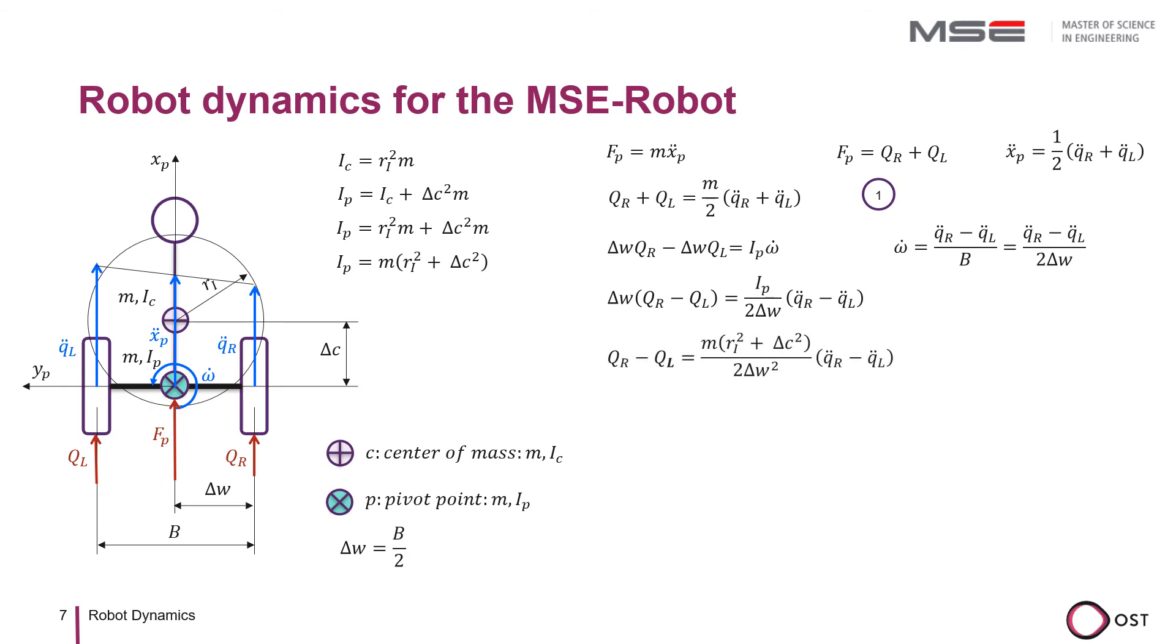We insert IP and divide the equation by delta W. We then simplify the equation by introducing a factor alpha with which we express and describe the distribution of inertia. This gives us the second dynamic relationship between forces and accelerations of the wheels.